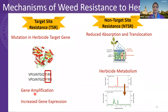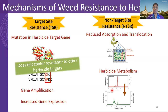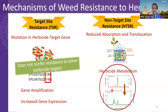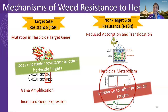The second mechanism is non-target site resistance. Here, the herbicide target is still sensitive, but other mechanisms — such as reduced herbicide absorption, translocation, or herbicide metabolism and degradation — allow the plant to survive. The herbicide becomes inactive due to certain enzymes in the plant. Importantly, if weeds have metabolic resistance, they can confer resistance to other herbicide targets as well, making this a very challenging phenomenon. I will spend more time on metabolic resistance later.